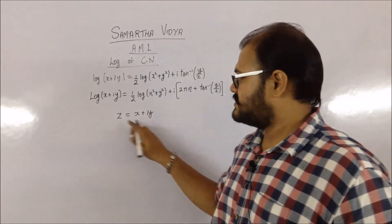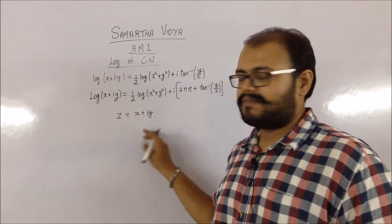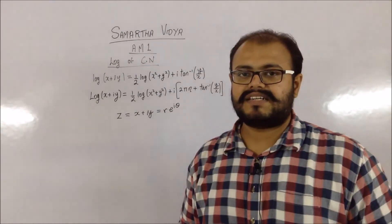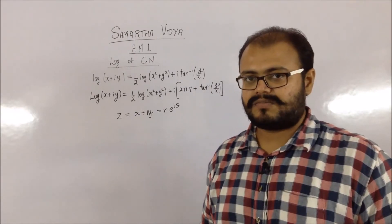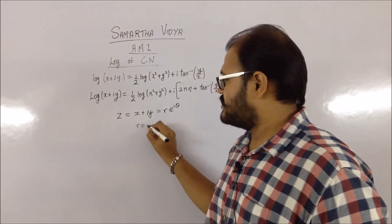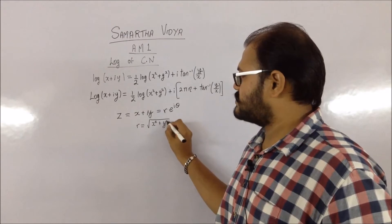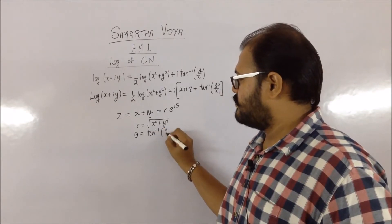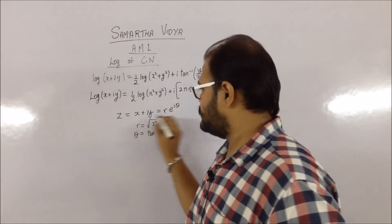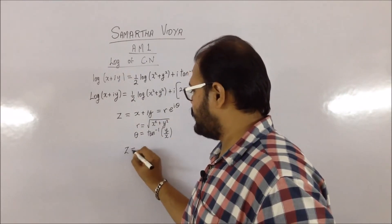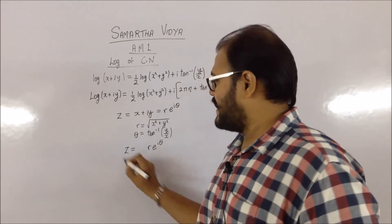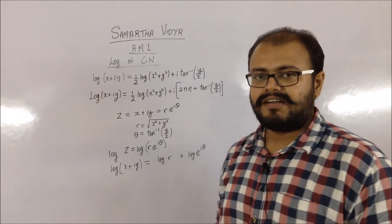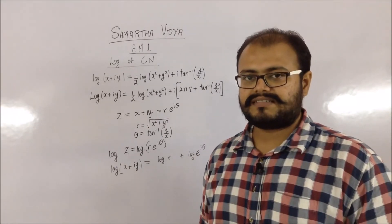To understand how this equation comes into existence, let us take the complex number z = x + iy. Since z = x + iy, we can replace it with r·e^(iθ), which is the Euler's or exponential form, where r = √(x² + y²) and θ = tan⁻¹(y/x). Taking log on both sides gives log(r) + log(e^(iθ)), using the property that log of a product becomes addition.